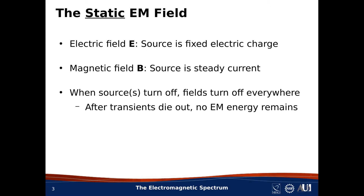So what do we mean by EM? We can break this down by first considering the static EM field. In a static EM field, we have an electric field which arises from electric charges which are fixed in space, and a magnetic field which arises from steady current. If you've taken a course in EM, you probably know these as the electrostatic and magnetostatic fields.